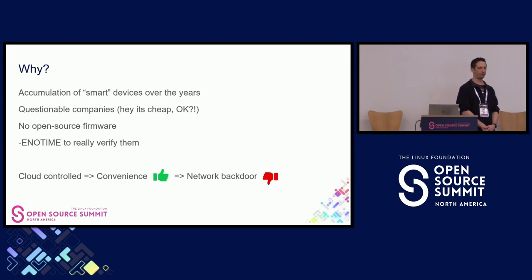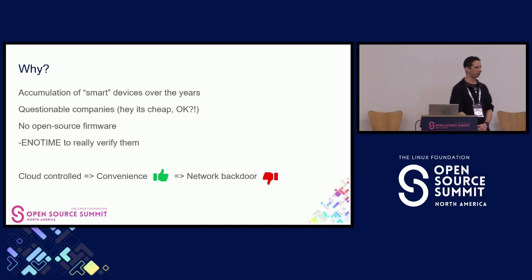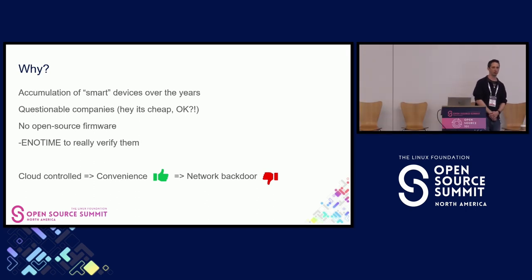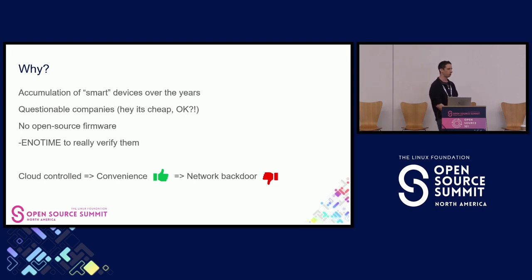But then what can you do? Really verifying them is impossible unless you have way too much time on your hands — you dump the firmware, load it up in Ghidra or something, and go through it to analyze for back doors. But even if there are no back doors, a lot of these devices are really cloud controlled, which is convenient — you can turn on your thermostat from across the world — but this is clearly a network back door. Whoever has access to that cloud system could control that device and have access to your network.